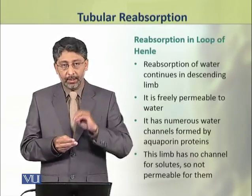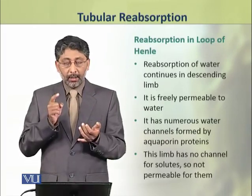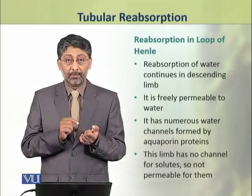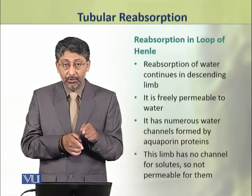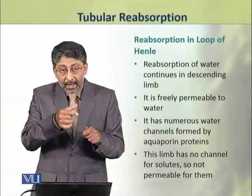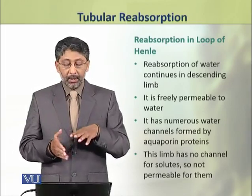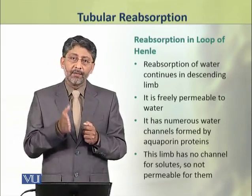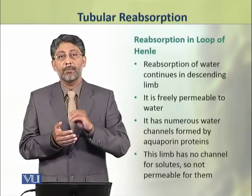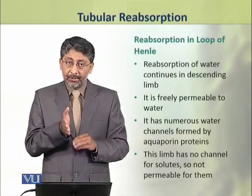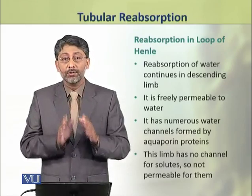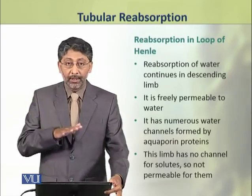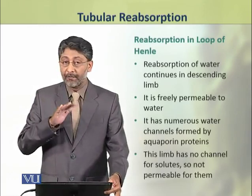Now we shall discuss reabsorption in the loop of Henle. The loop of Henle is important for the reabsorption of water. Reabsorption جو proximal convoluted tubule میں شروع ہوئی تھی that continues in the descending limb of the loop of Henle, because this limb is freely permeable to water. It has numerous water channels made by aquaporin protein. However, the descending limb has no channels for solutes, اس لئے یہ solutes کے لئے permeable نہیں ہے، اور solute کی reabsorption descending limb سے نہیں ہوتی۔